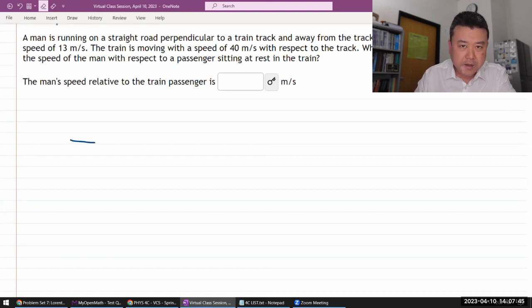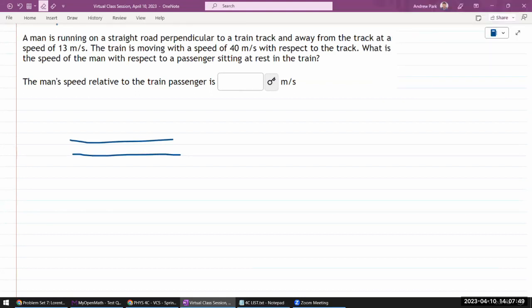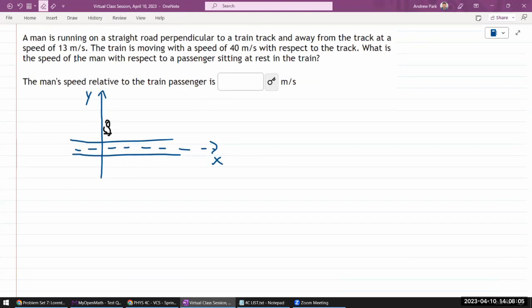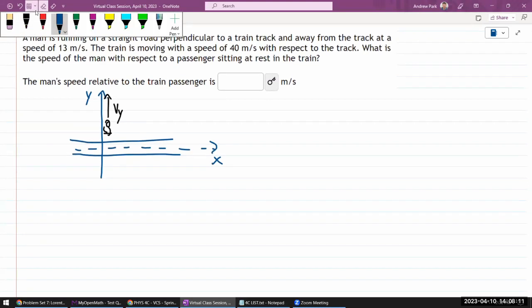So there is some kind of a railroad track. And I'm guessing this is what I want my x-axis to be. And it says the man is running perpendicular. So let me just call this y-axis. And there's somebody running here in this direction with some speed v_y that is given in the question.